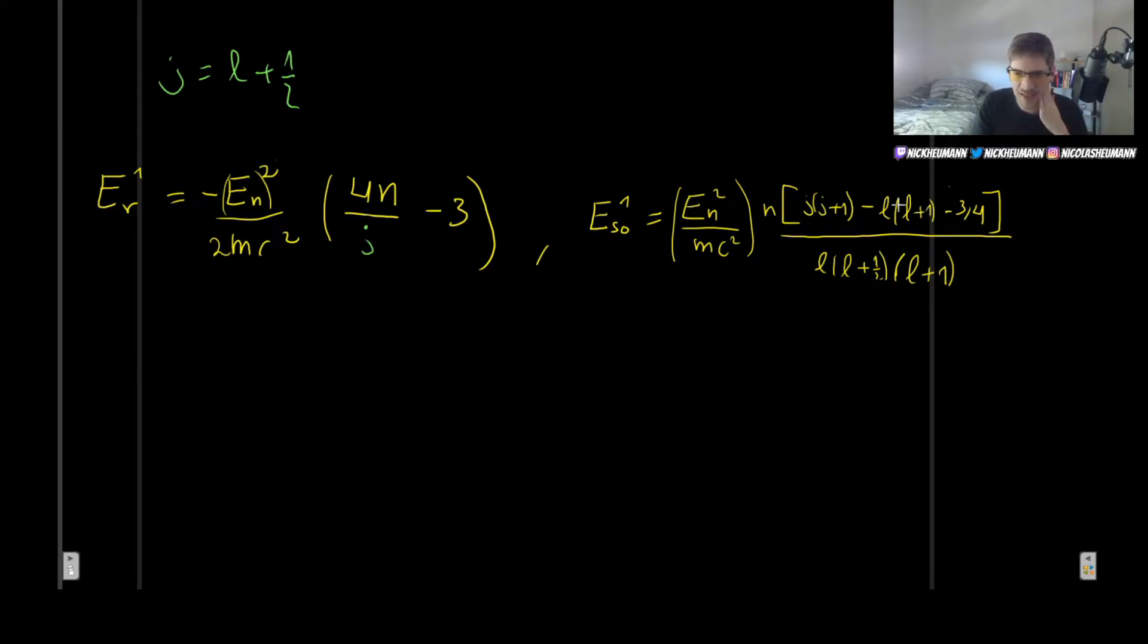The spin-orbit coupling is a little bit more annoying, but it's not too bad. So let's take our time with it. So this is going to be the energy levels squared—this does not mean second-order correction. I know the notation can get a bit messy, but this just means energy levels squared times N.